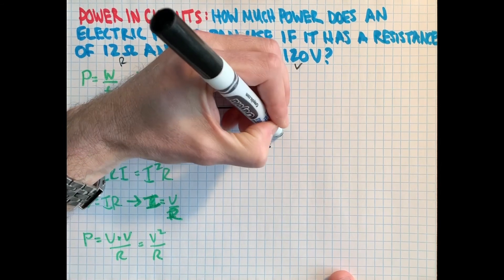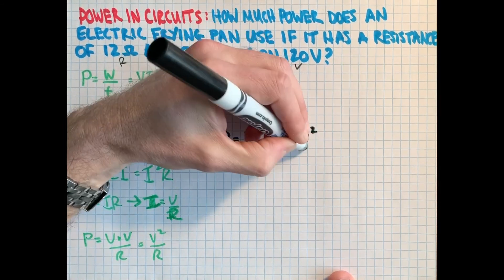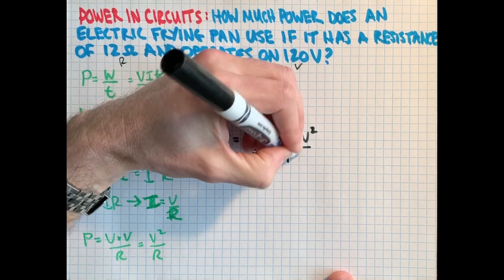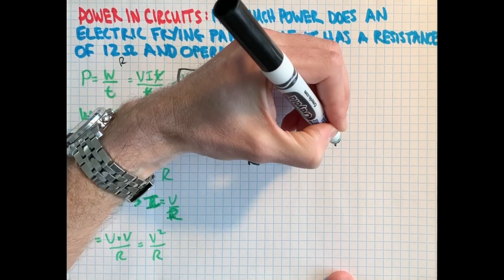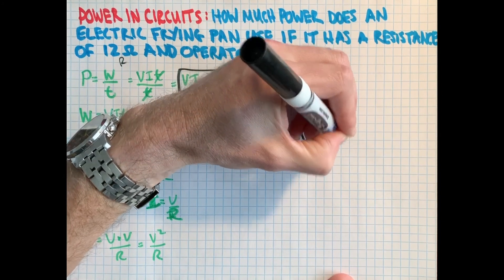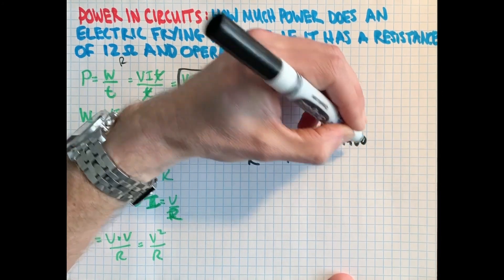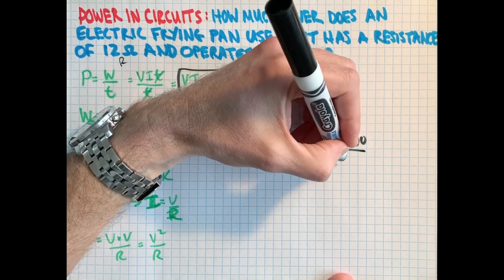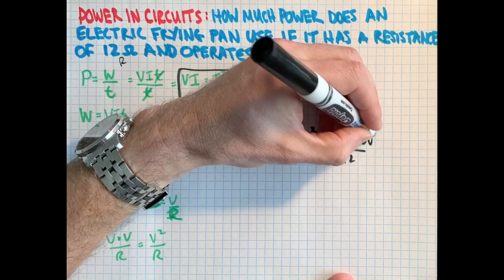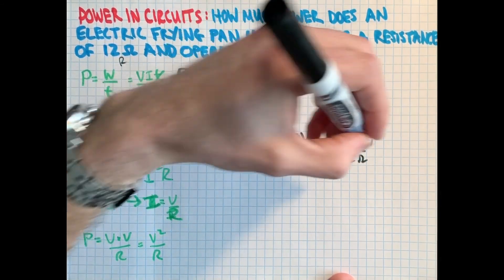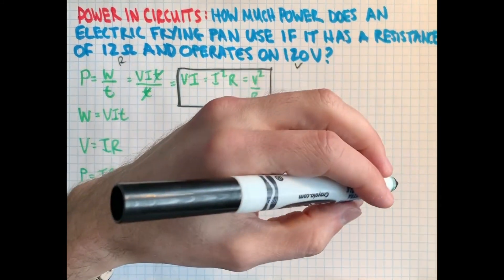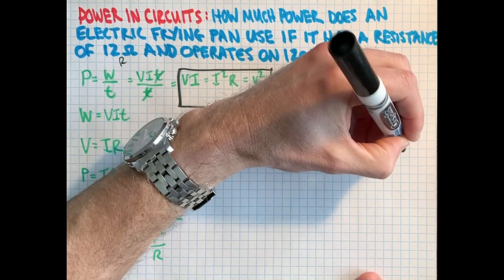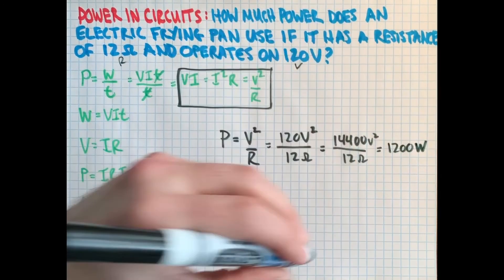So this gives us 120 volts squared all over 12. These are nice numbers, right? That gives me 14,400 here. So volts squared divided by 12 ohms, which when we divide that out will give us watts. We divide those two numbers and we get 1,200 watts, which remember is a joule per second.